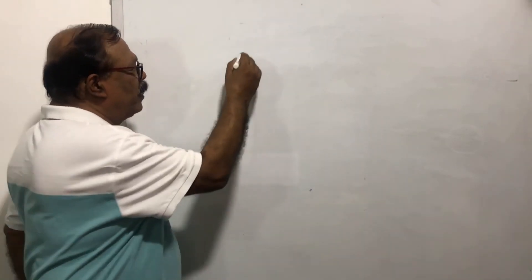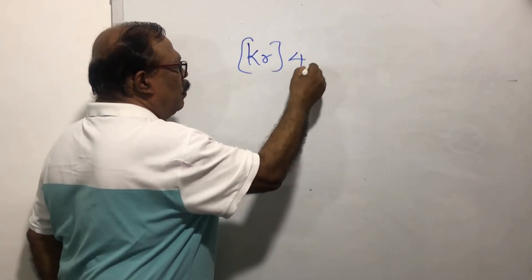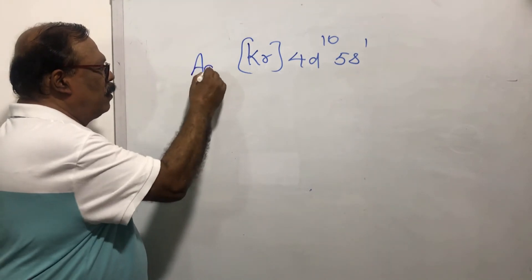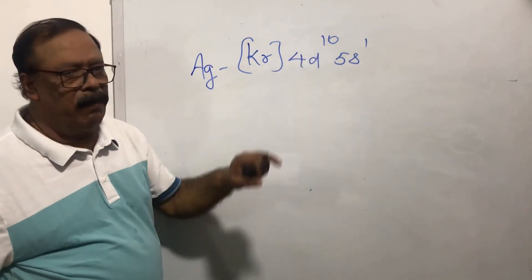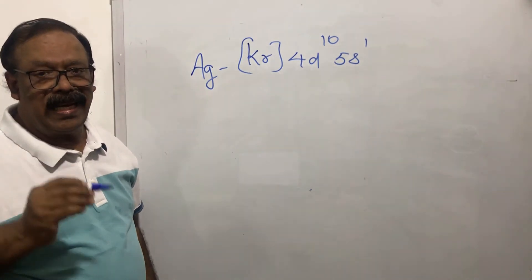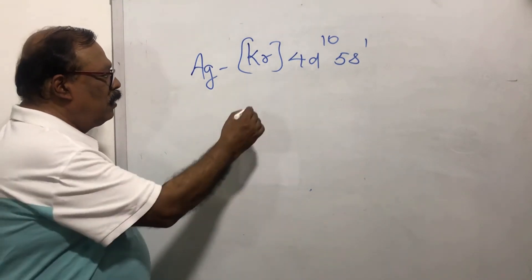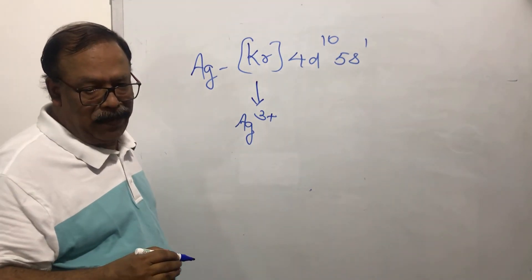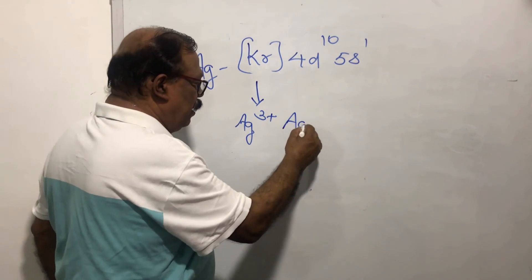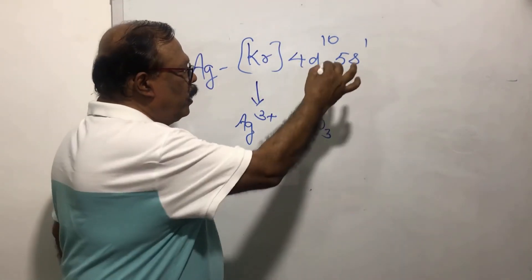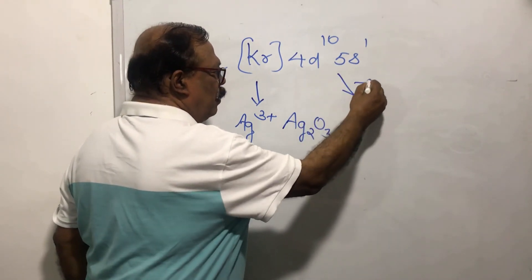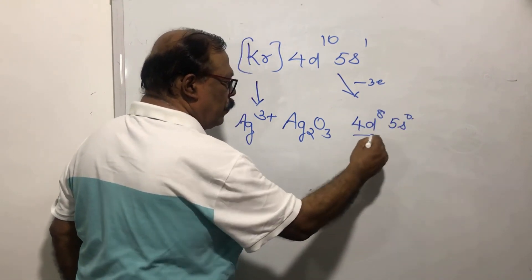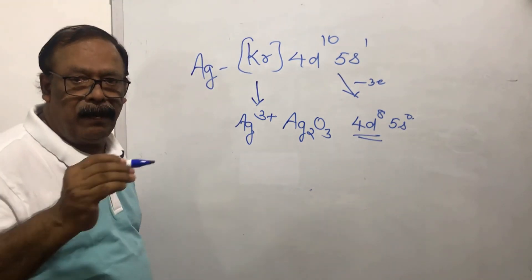Silver has the configuration krypton 4d10 5s1. The d-orbitals are completely filled. The question is whether it is a transition element or not. Silver has an oxidation state of Ag3+, which exists in Ag2O3. Three electrons are lost, and in this ionic state the d-orbitals are incomplete. Hence, silver is a transition element.